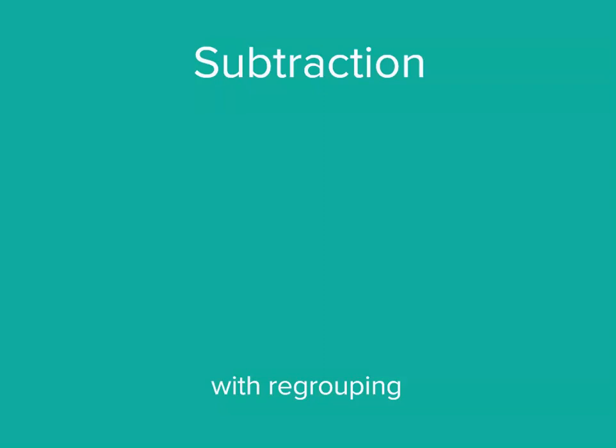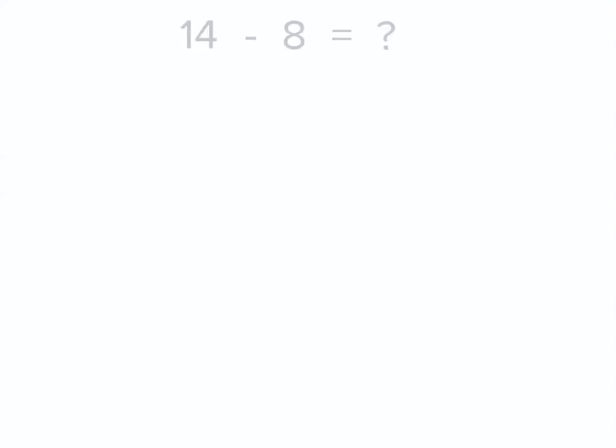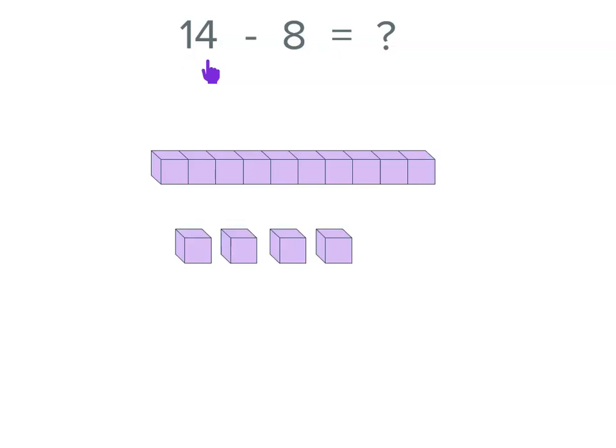Let's look at subtraction with regrouping or trading. Before we start our vertical algorithm though, if we had 14 minus 8, we could think of 14 as 1 ten and 4 units. And then what we want to do is subtract 8 units or 8.